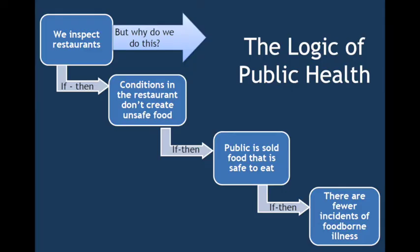We first begin by examining the if-then statement. This is an example of a logic model in public health. Let's start with the problem — there are people getting very sick in a location. As a public health agency, you may want to investigate by conducting a logic model. If we inspect restaurants, then conditions in the restaurants don't create unsafe food. If conditions don't create unsafe food, then the public is sold food that is safe to eat. If the public is sold food that is safe to eat, then there are fewer incidents of foodborne illnesses. Each event begins with an if-then statement, describing the logic of the process.